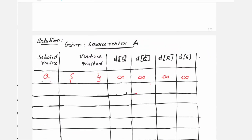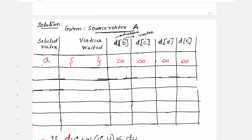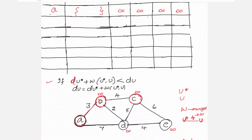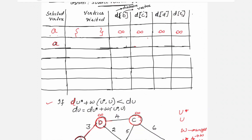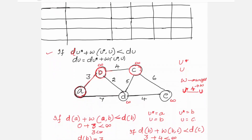In the table, d represents the distance, and b, c, d, e represent the destination vertices. This is the first step carried out on the graph: the selected vertex is A, which is included in the visited vertices. Now we compute A reaching B, A reaching C, A reaching D, and A reaching E.